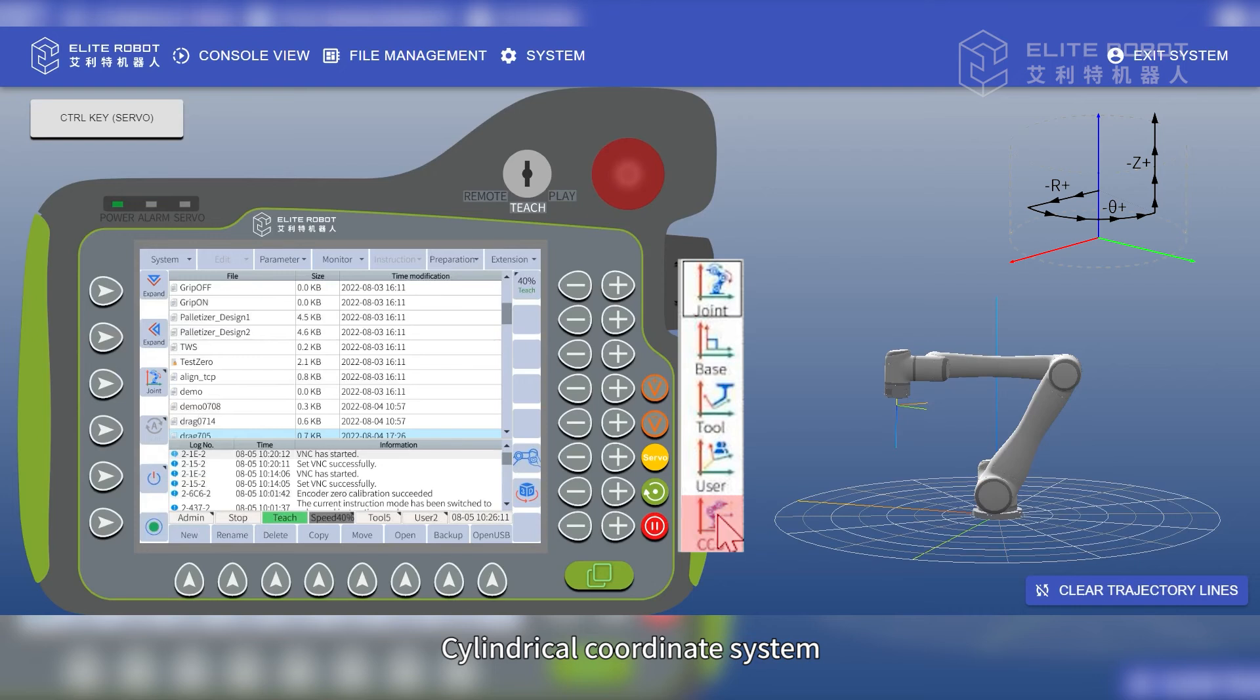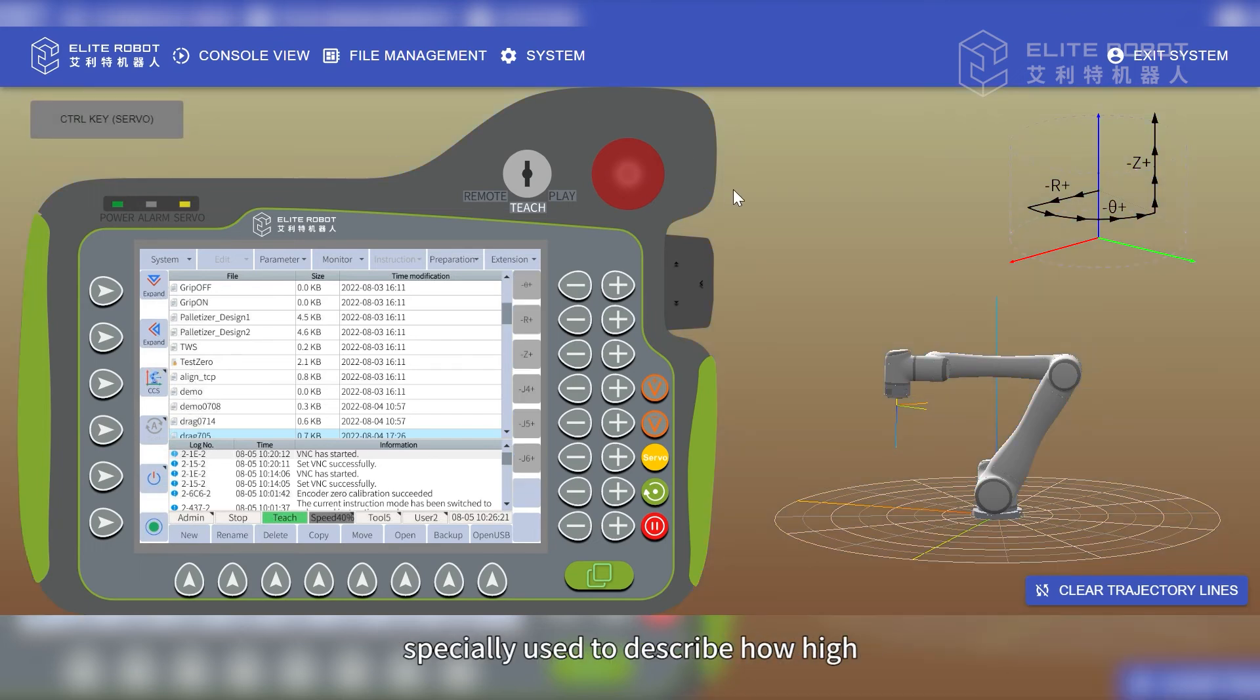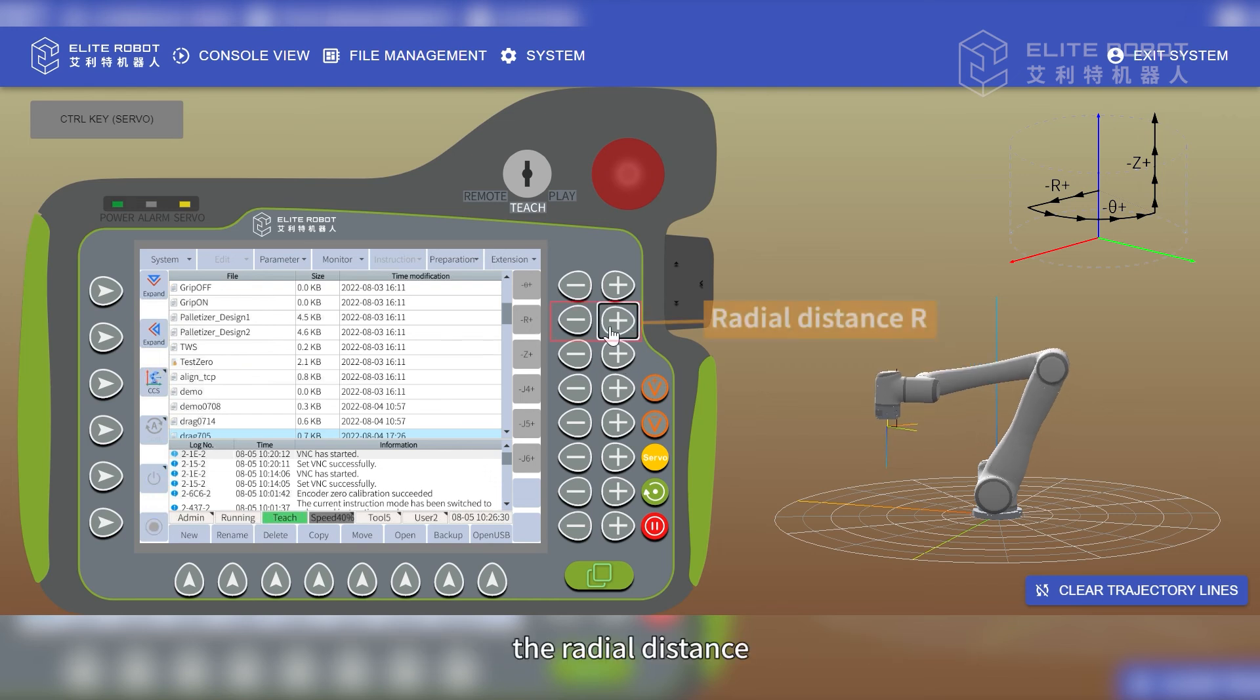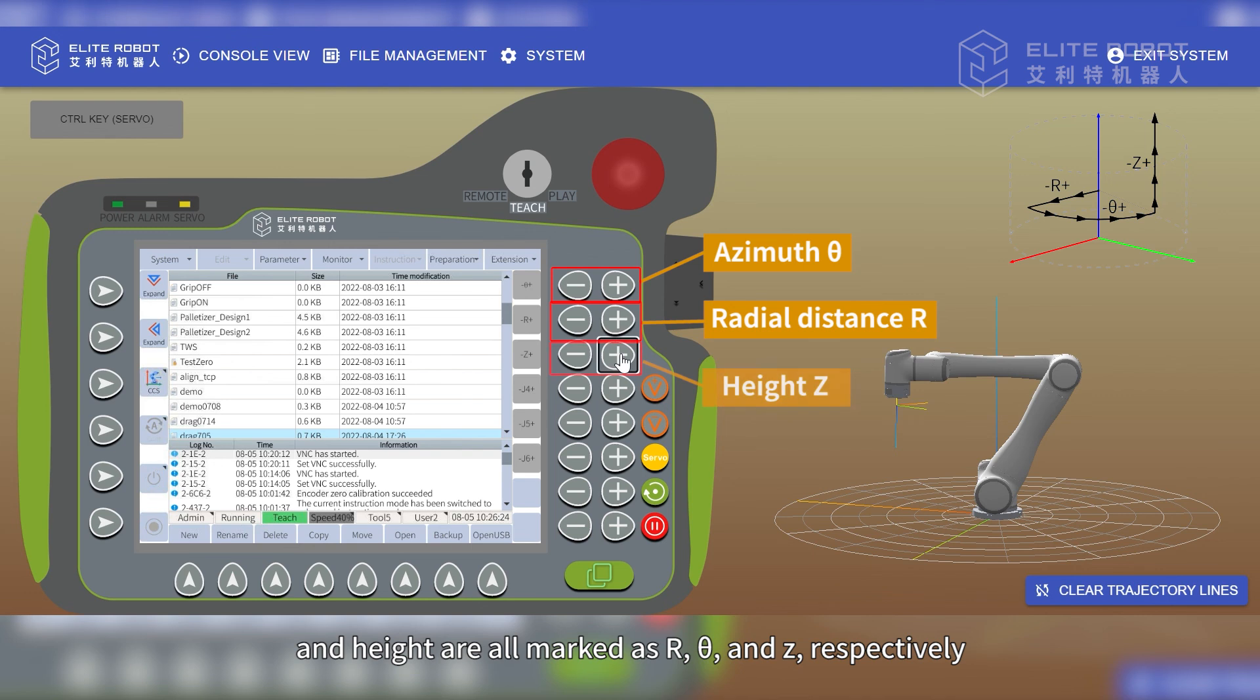The cylindrical coordinate system is a three-dimensional coordinate system. It is an extension of the two-dimensional polar coordinate system with a z-axis added in. The added third coordinate direction is specially used to describe how high or low the position point is from the x-y plane. According to the convention established by the International Organization for Standardization, the radial distance, azimuth, and height are all marked as r, theta, and z, respectively.